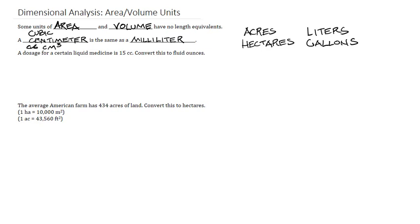So for our first problem, a dosage for a certain liquid medicine is 15 cc, or 15 cubic centimeters, and we want to convert this into fluid ounces. We begin, of course, with 15 cubic centimeters.